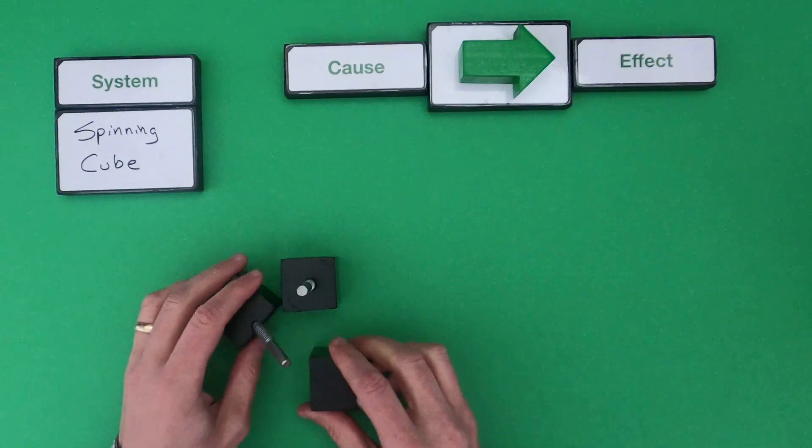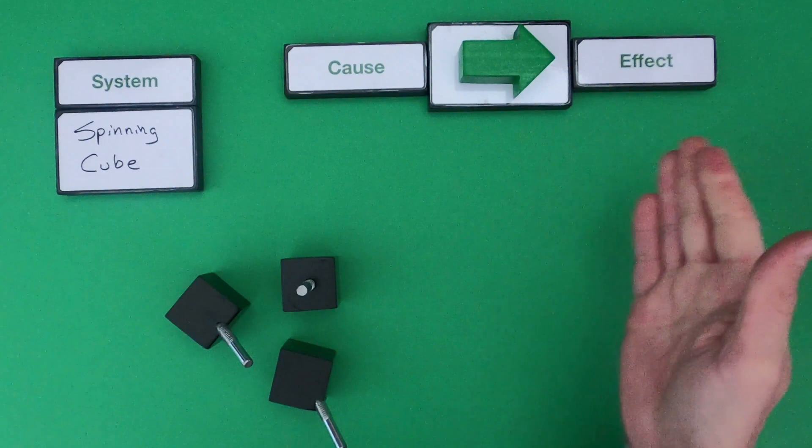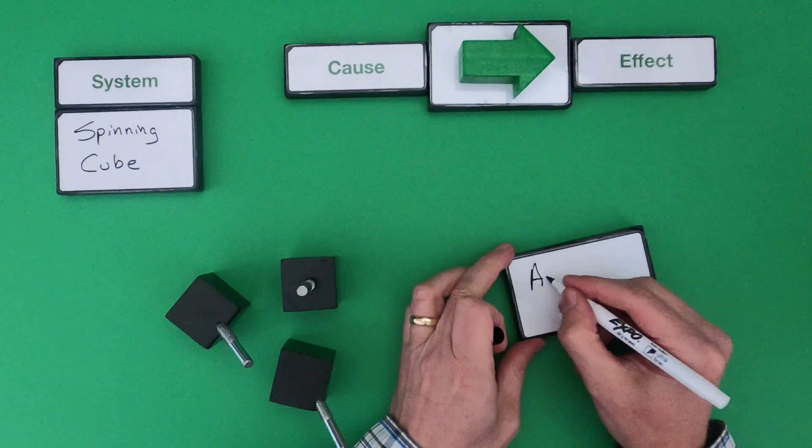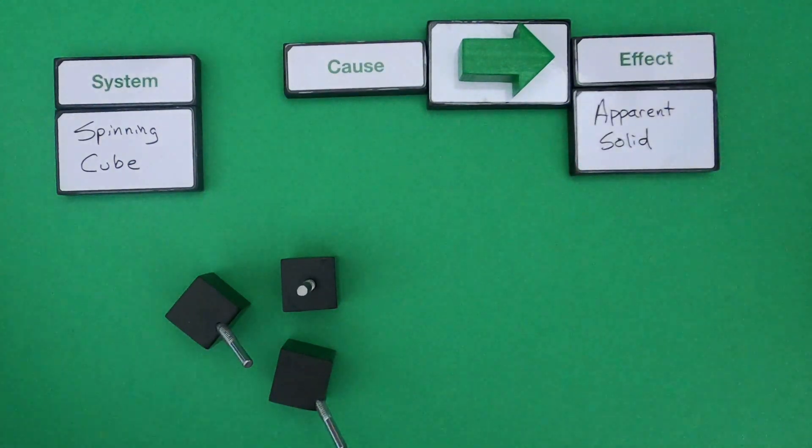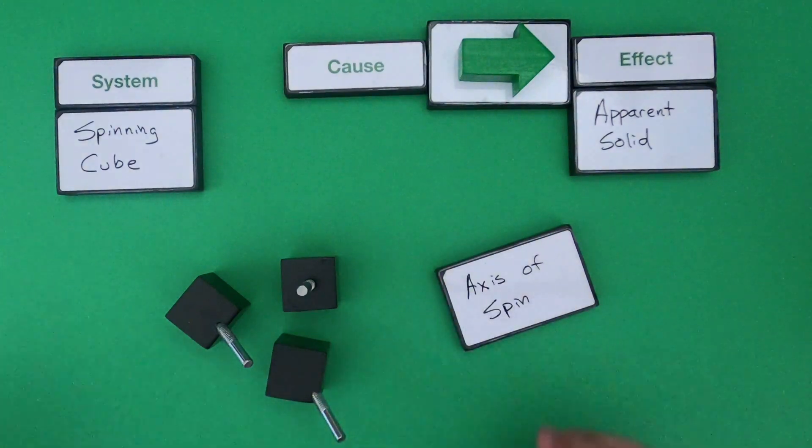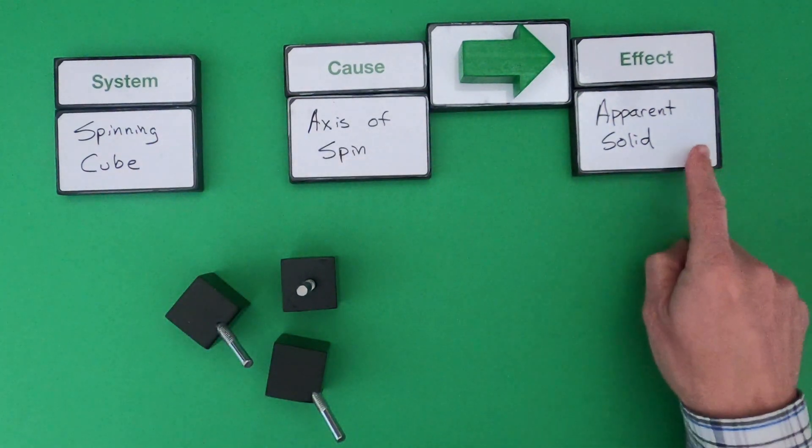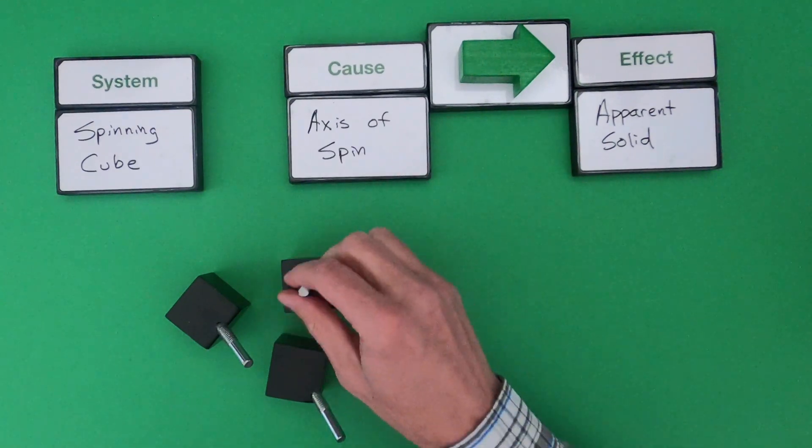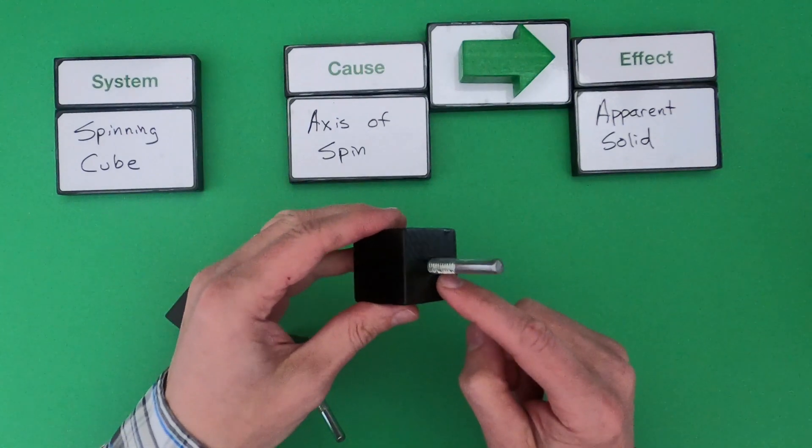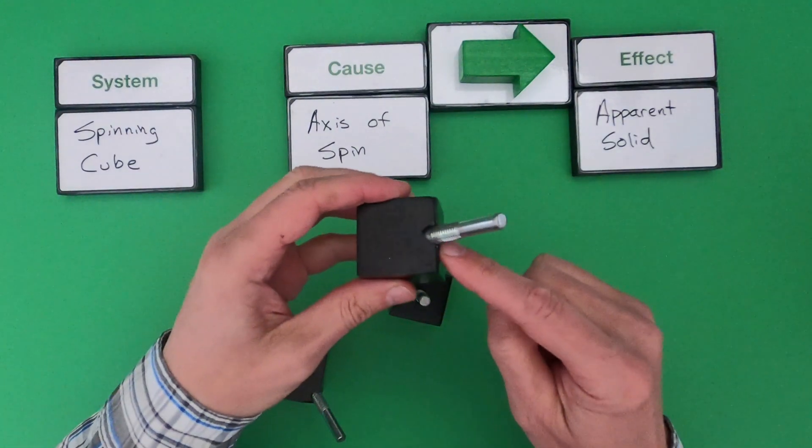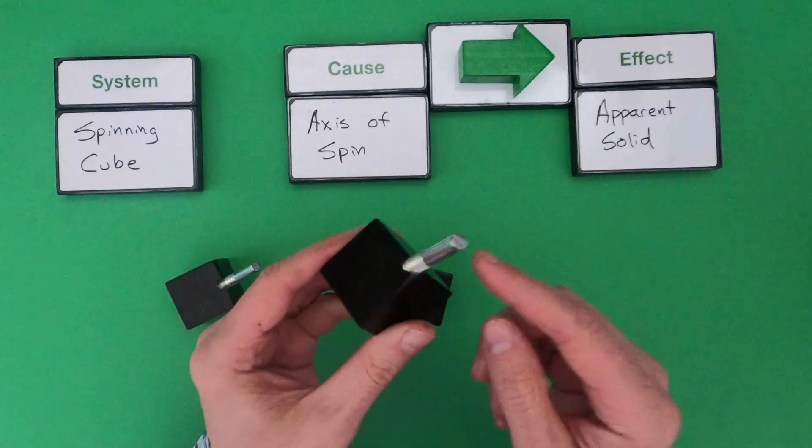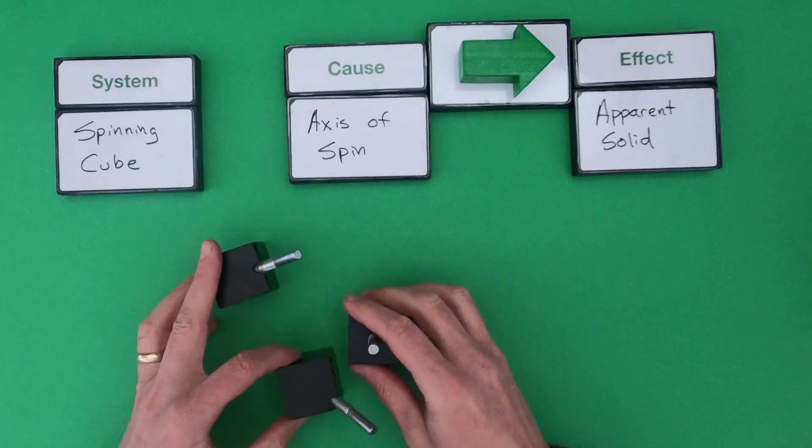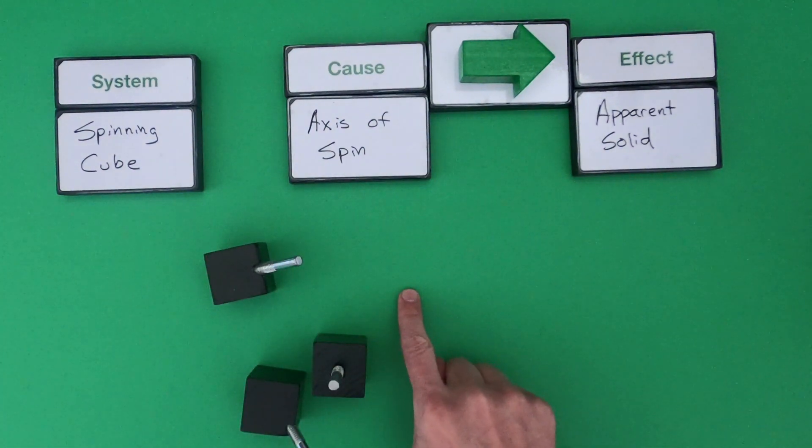What I'm going to do is set up a quick investigation where we look at the effect and the cause. We're going to be studying the apparent solid that shows up, but what we're going to vary is the axis of spin. Are we spinning it around the center of the axis like in this one, or in the middle of one of the sides in this one, or in the corner? We're just going to investigate what happens when you change that axis of spin.